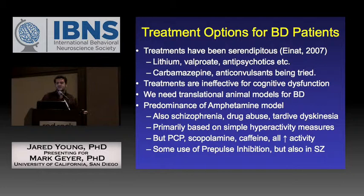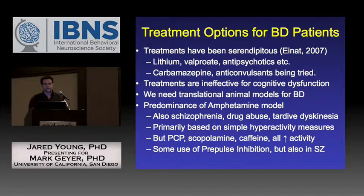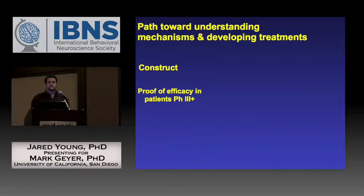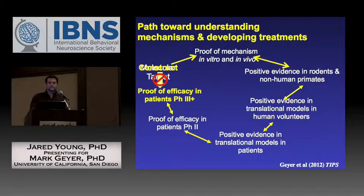Beyond hyperactivity, there are other cross-species translatable behaviours such as pre-pulse inhibition, which shows deficits in schizophrenia and many other disorders. Ideally, the pharmaceutical industry would go from construct straight into phase three efficacy trials, but drug discovery requires proof of mechanism, positive evidence in rodents and non-human primates, then through to humans — a process that takes considerable time, as Mark published in TIPS in 2012.